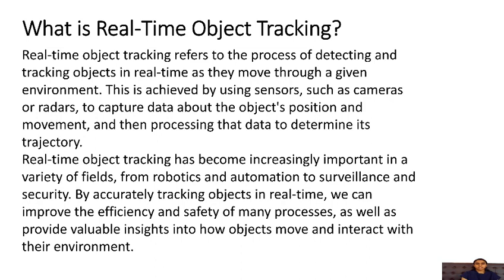What is real-time object tracking? Real-time object tracking refers to the process of detecting and tracking objects in real-time as they move through a given environment. This is achieved by using sensors such as cameras or radars to capture data about the object's position and movement, and then processing the data to determine its trajectory.